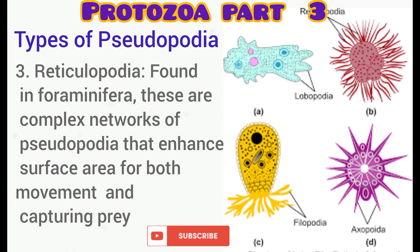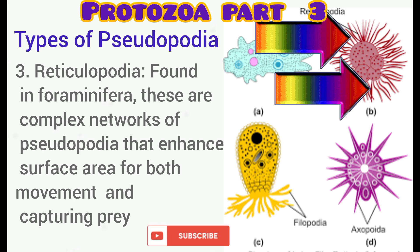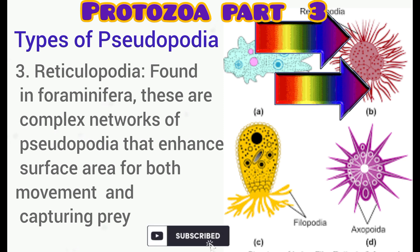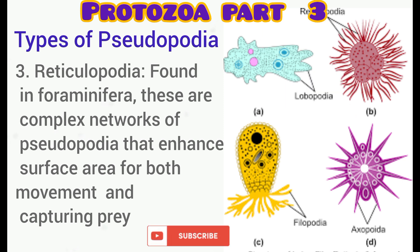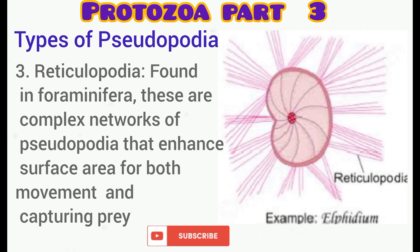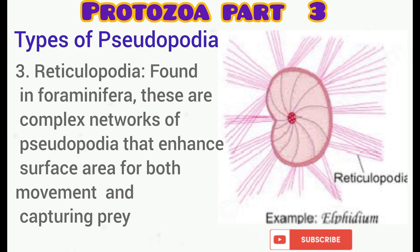The reticulopodia are found in foraminiferans. They form a complex network of pseudopodia that enhances the surface area both for capturing food and movement. An example is found in the Amphistegina species — you can see the extensive network of pseudopodia in this organism.